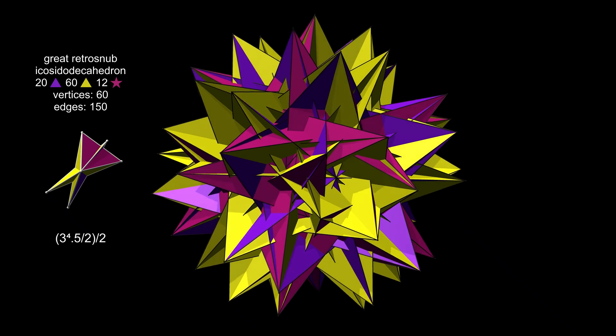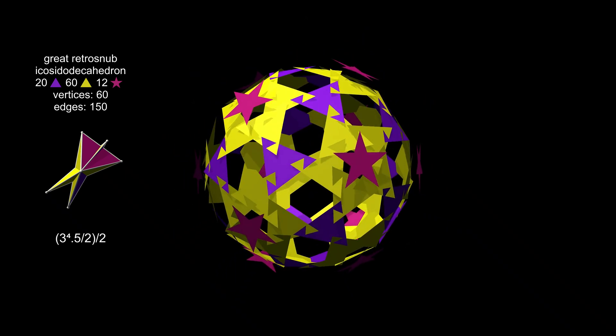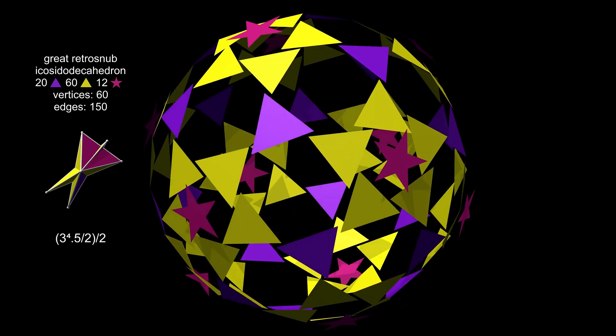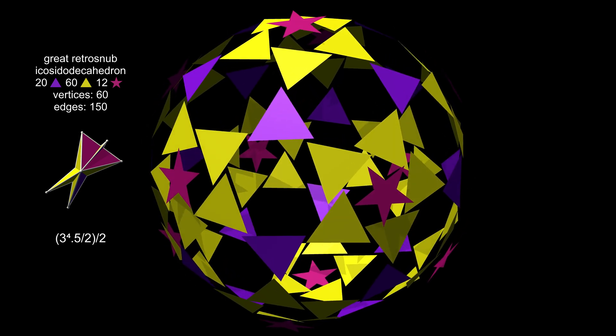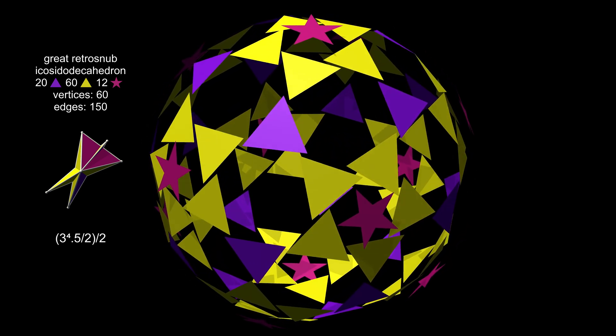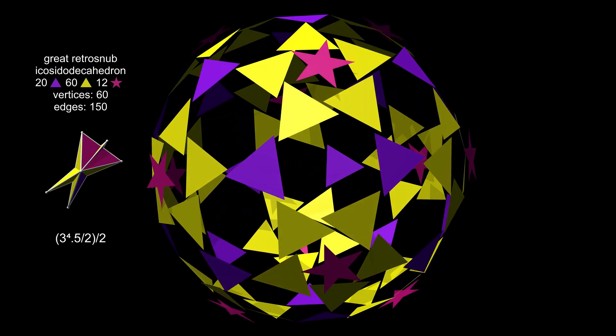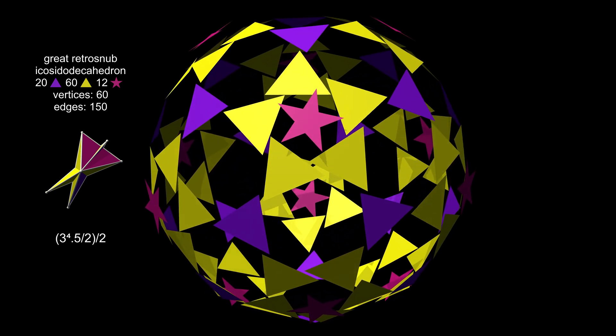The penultimate figure is the great retrosnub icosidodecahedron, an elaborate combination of 92 faces, meeting in 150 edges and 60 vertices. The exploded figure has 12 pink pentagrams arranged as the vertices of an icosahedron, and 20 purple triangles as its faces, but all rotated slightly.